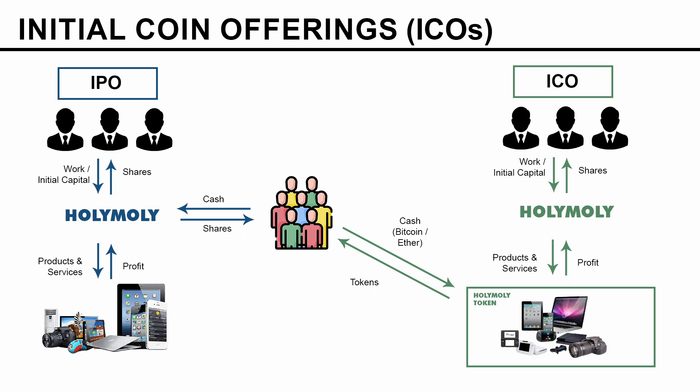The public gives cash to the company — usually in Bitcoin or Ether — and in return they get tokens. The important thing to notice is the conceptual difference between an IPO and an ICO. In an IPO, the public gets shares, some authority and rights, and dividends as part of the profit. Whereas in an ICO, the public gets none of that — they just get tokens they can use to buy products and services, or hold them and sell later at a higher value. The founders keep all control of the company and all the shares and profit.